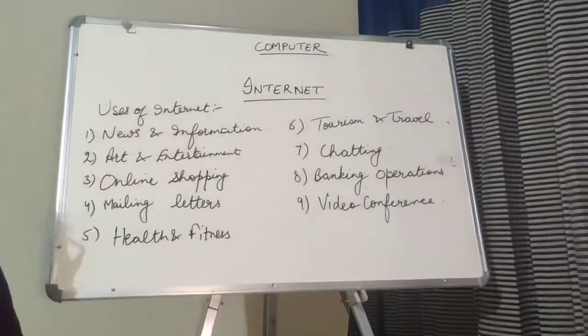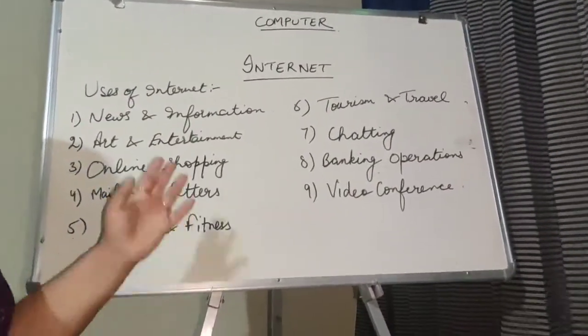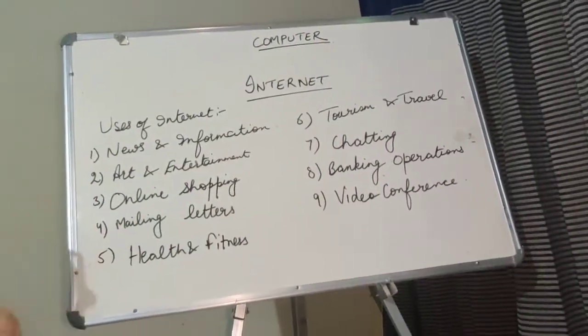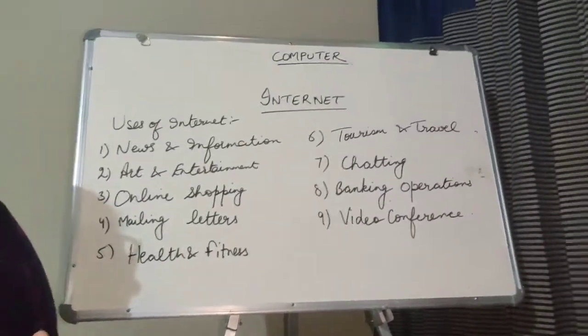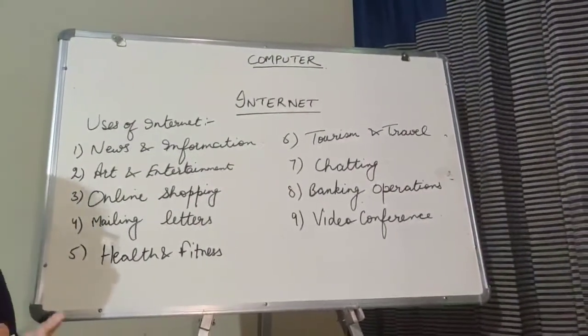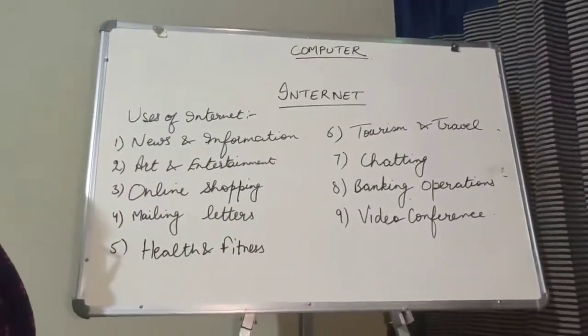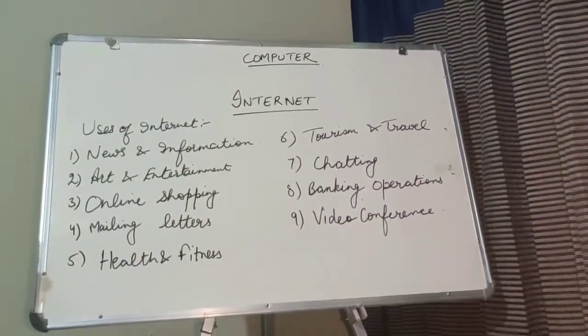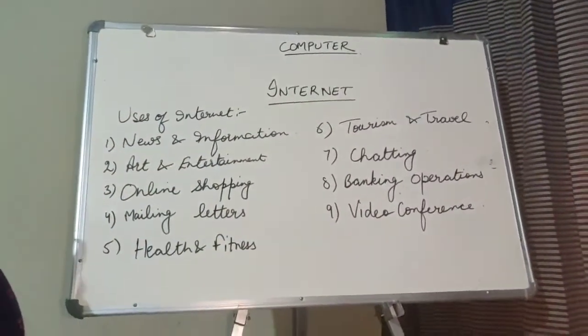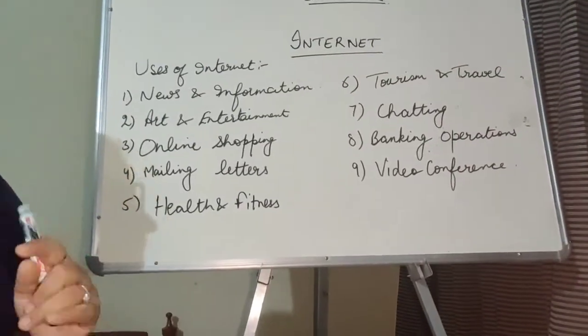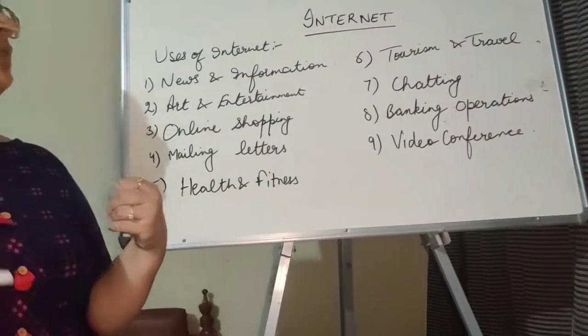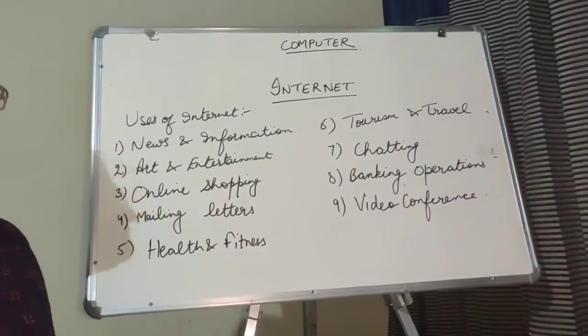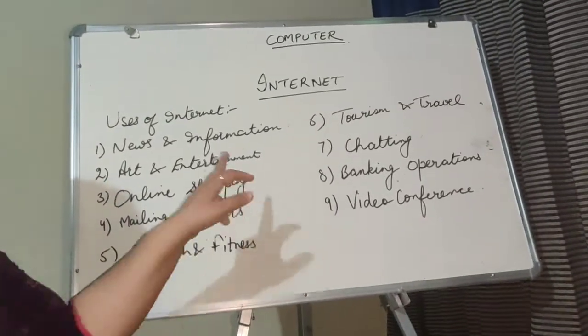Second is art and entertainment. Agar hume art and entertainment, hum internet me kaise use karte hai. Koi bhi song hai latest song aata hai usko download kar sakti ho. Koi music hai woh aap download kar sakti ho. If you want to watch some movie, movie dekh sakte ho koi bhi. Kuch draw karna hai internet ka through you can draw easily. Koi music sunna ho, koi song sunna ho, koi video watch karni ho, koi movie watch karni ho. These all can be done easily through internet.